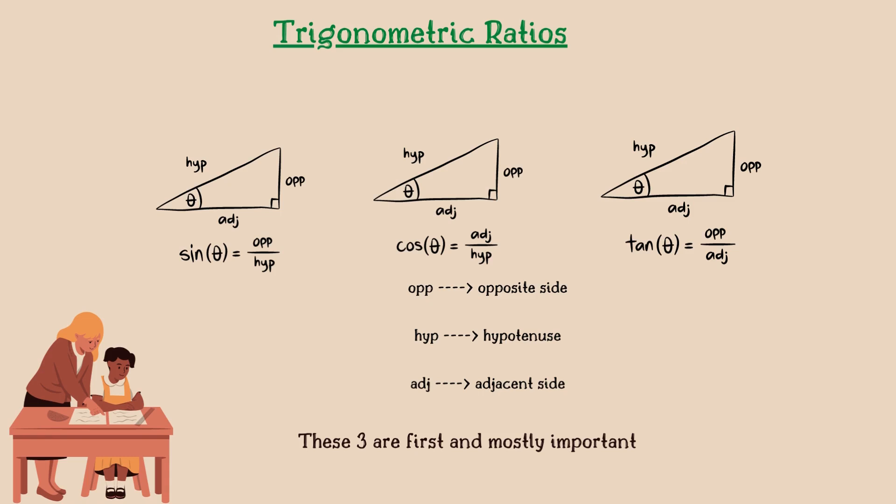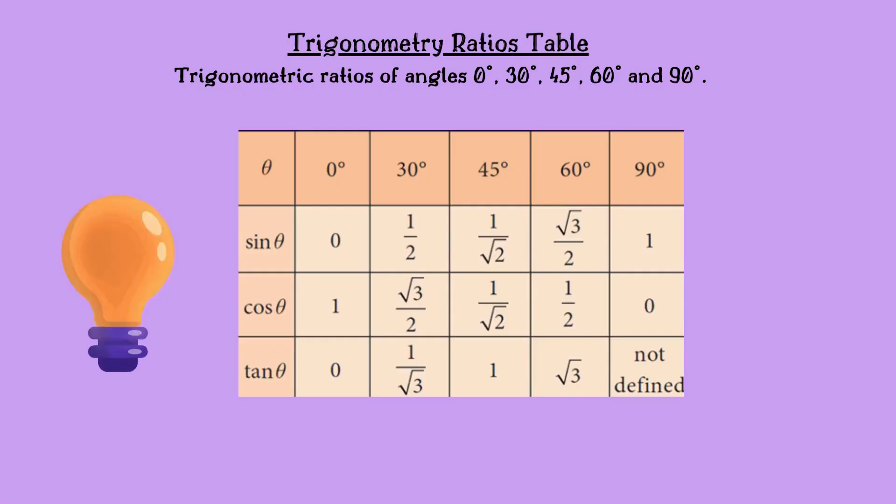In that, mainly sin, cos, and tan are important. Sin theta equals opposite side by hypotenuse side, cos theta equals adjacent by hypotenuse, tan theta equals opposite side by adjacent. Now see the above table of trigonometry ratios for sin, cos, tan in 0, 30, 45, 60 degree angles.